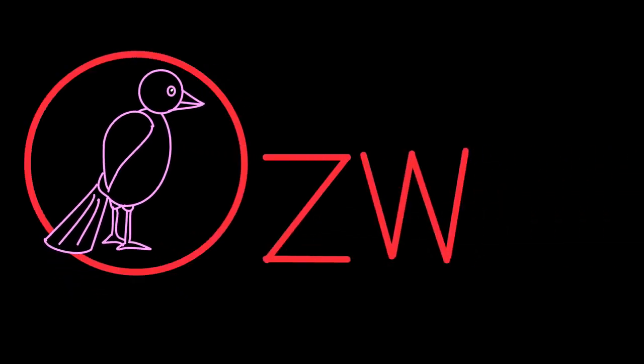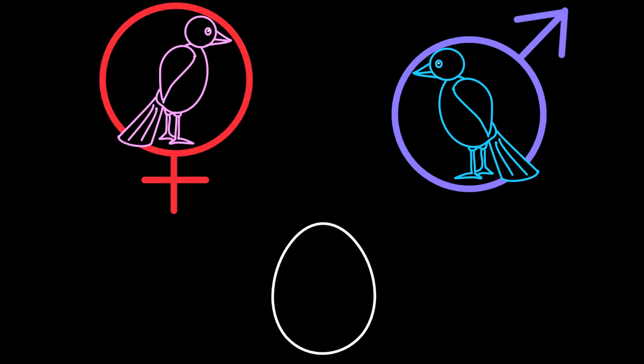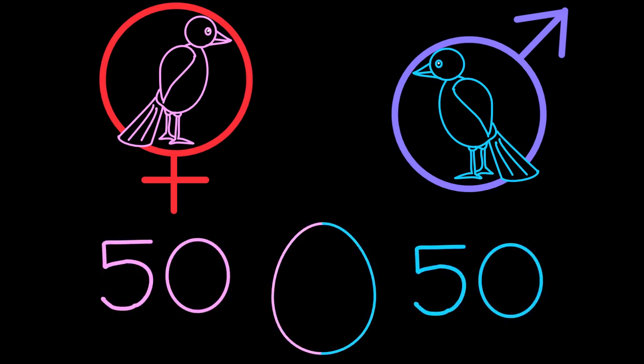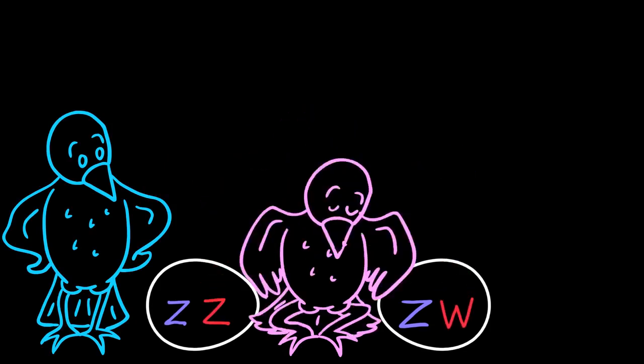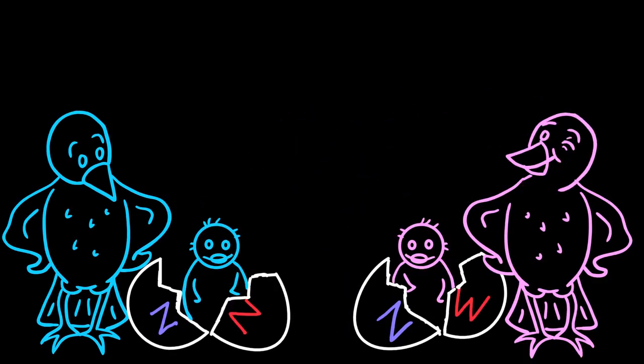So these males only have Z's to give. However, in these animals, one Z and one W chromosome together as a pair produces a female. In this system, the chance of a male or a female is still 50/50; it just depends on whether mom puts a Z or a W into her egg.